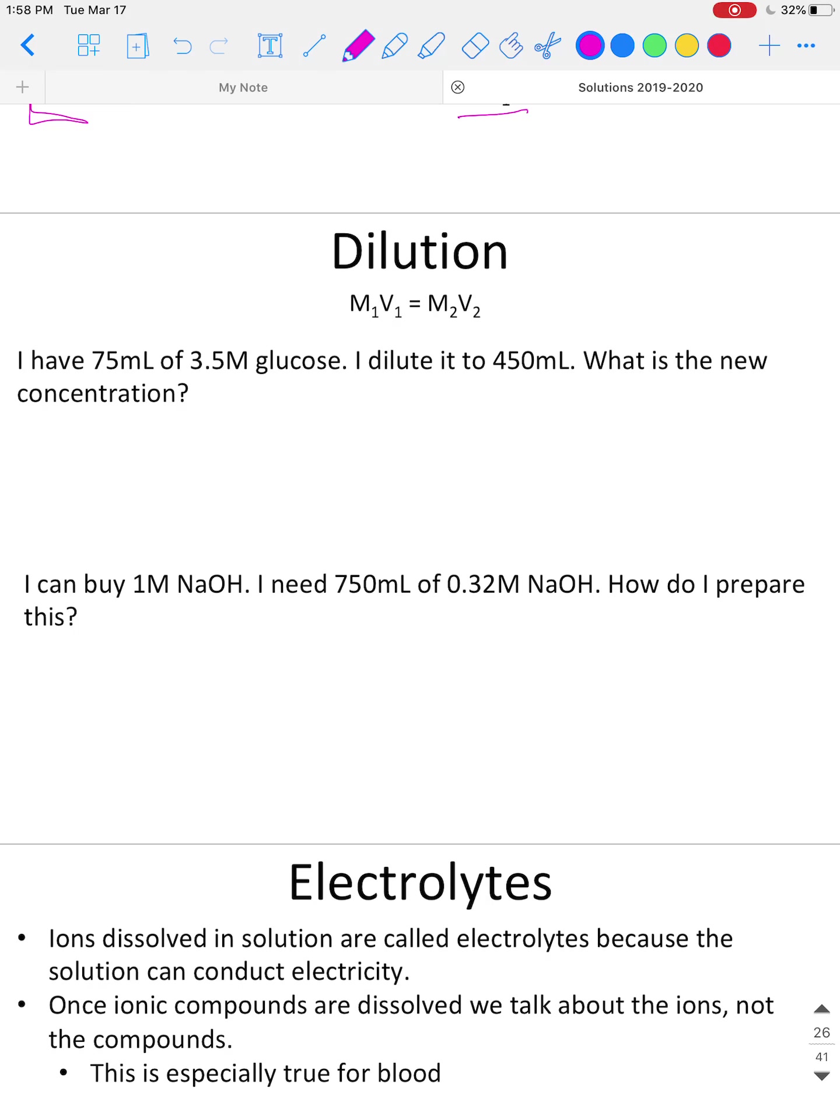It says I have 3.5 molar glucose and 75 milliliters, and that's before the dilution, so this has to be V1. Milliliters is units of volume. This has to be M1, this is the initial concentration in molarity. I dilute it to a new volume, so this is V2, the new volume, and we're looking for the new concentration, which is M2. So here we're solving for M2.